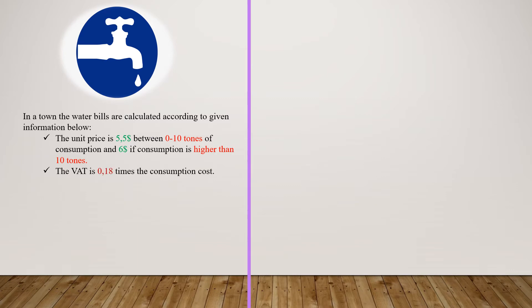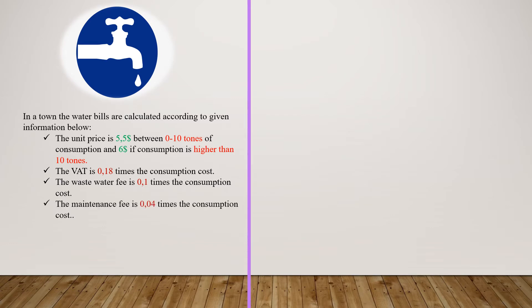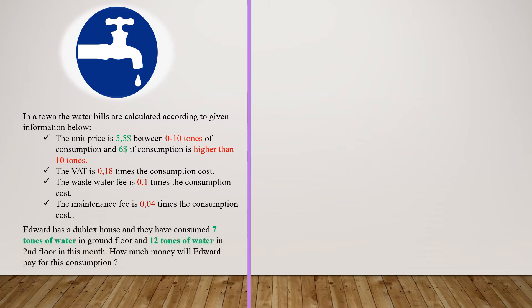The VAT is 0.18 times the consumption cost. The maintenance fee is 0.18 times the consumption cost. Edward has a duplex house and they have consumed 7 tons of water on the ground floor and 12 tons of water on the second floor this month. How much money will Edward pay for this consumption? Do not forget to stop the video here and try to solve the problem on your own.